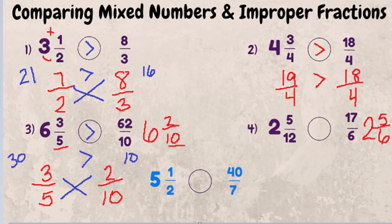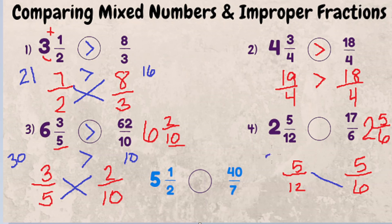So if we write five twelfths and five sixths, we can cross multiply: five times six is 30, and twelve times five is 60. Since 30 is less than 60, two and five twelfths is less than 17 over six.